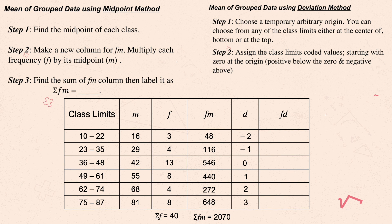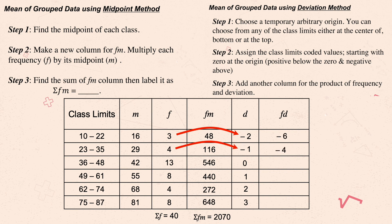Step three: add a column for the product of frequency and deviation (fd). Given the data: 3×(−2)=−6, 4×(−1)=−4, 13×0=0, 8×1=8, 4×2=8, and 8×3=24. Get the sum and express it as sigma fd — here sigma fd equals 30.